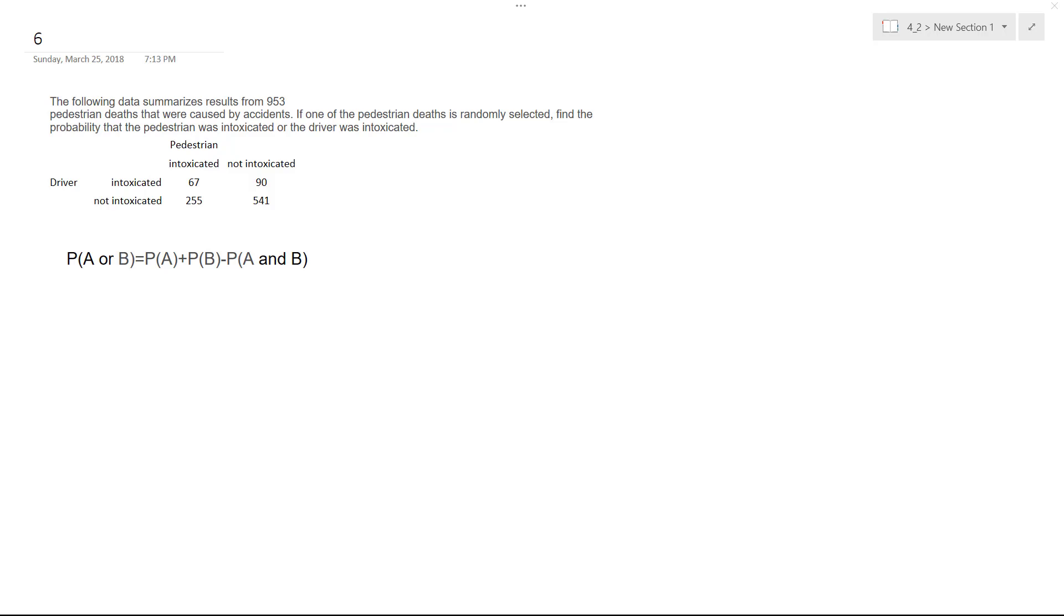Alright, so we want to figure out the probability that in the situation of a death, a pedestrian death randomly selected, that the pedestrian was intoxicated or the driver was intoxicated, but not both.